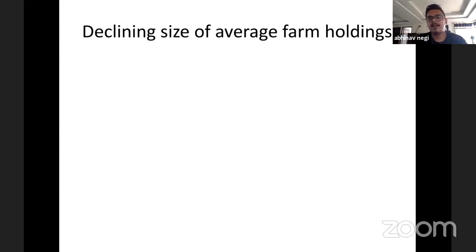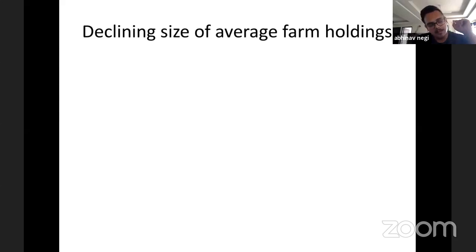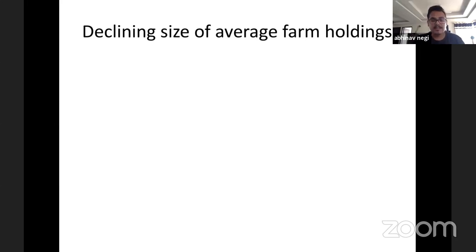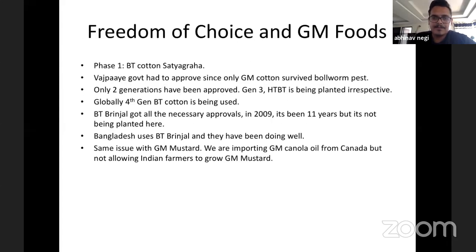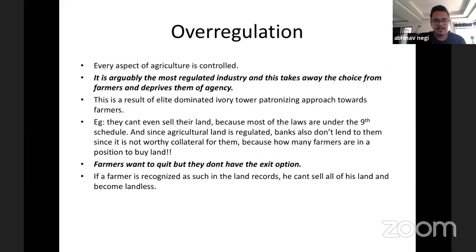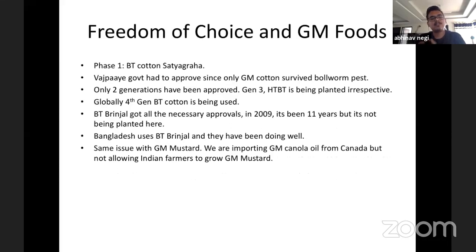You might think the easy solution is for these people to sell their land and migrate to cities. But the answer is no, because of certain well-intentioned policies from the 1960s and 70s that served their purpose then but now prevent farmers from selling their land. There is no exit option for farmers in India today. Let me skip ahead to explain the issue of freedom of choice that the state is denying to these farmers.